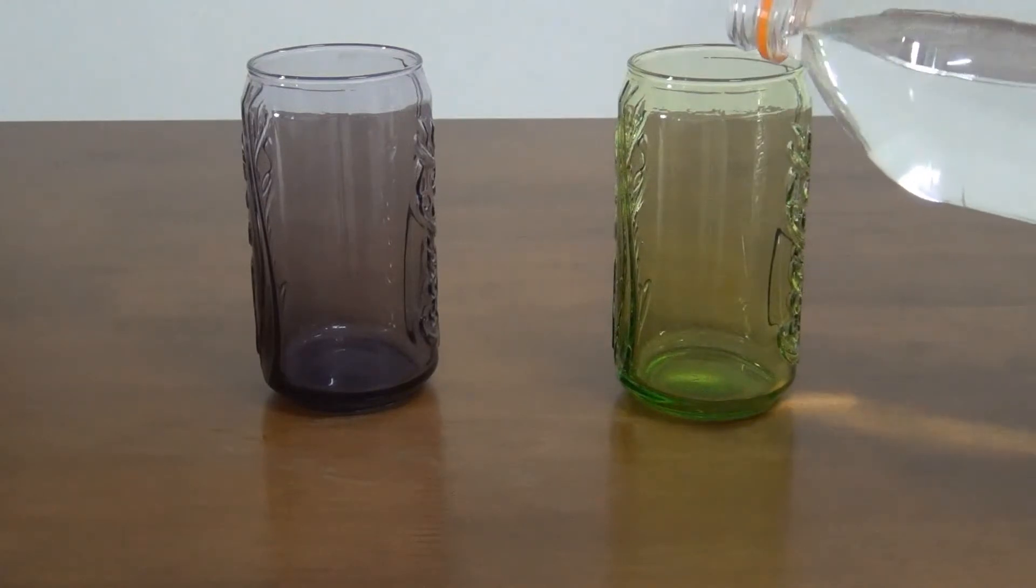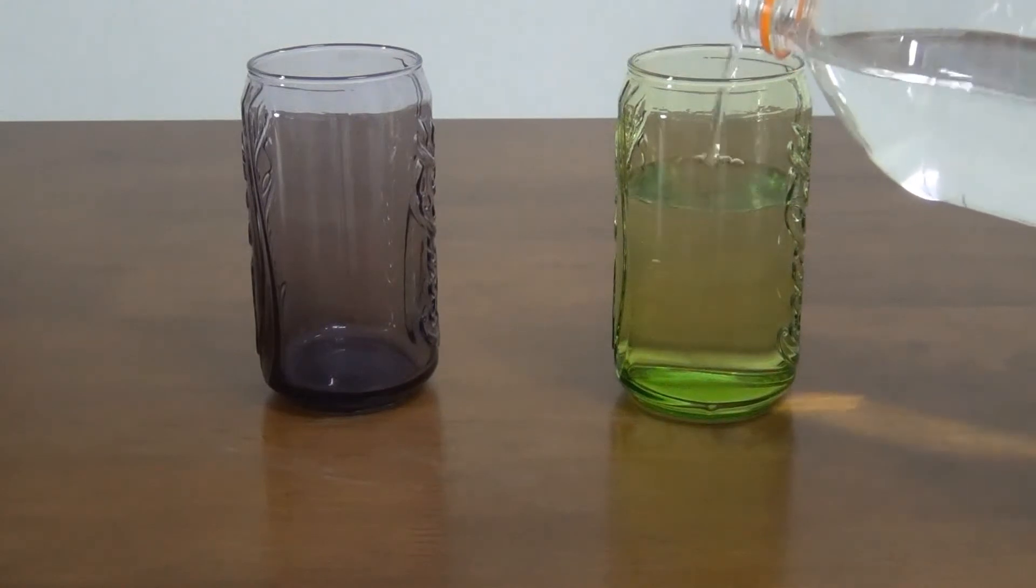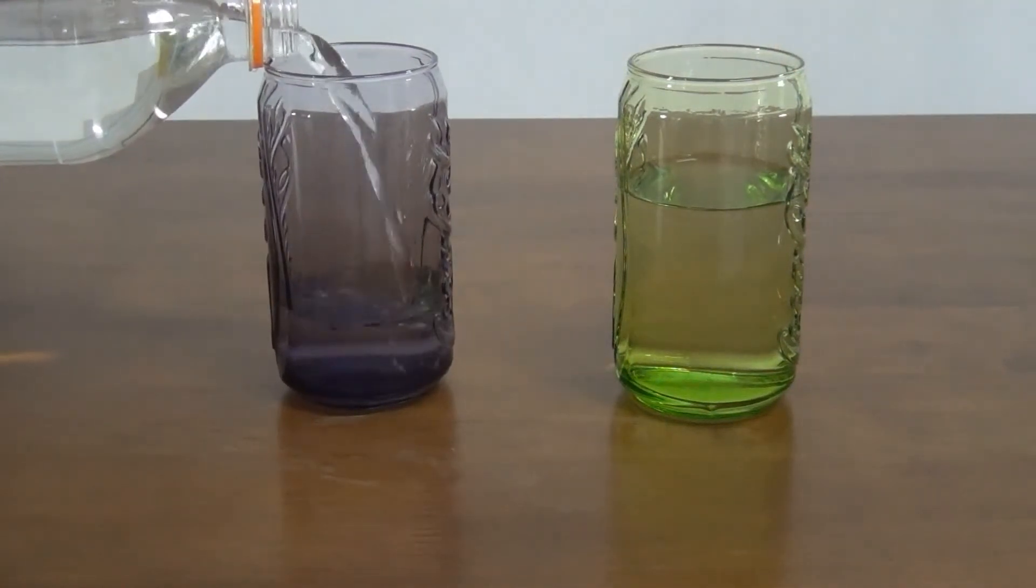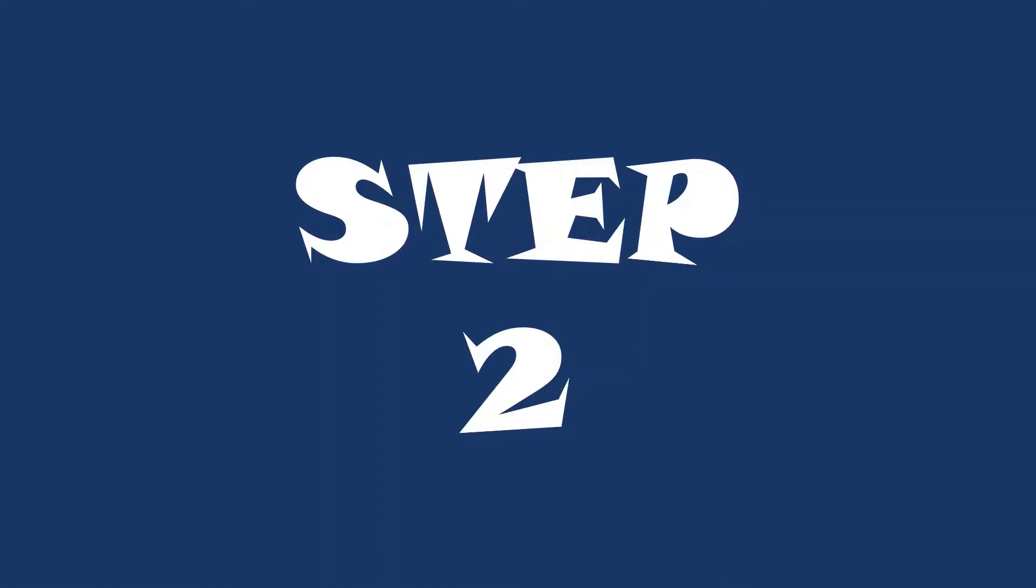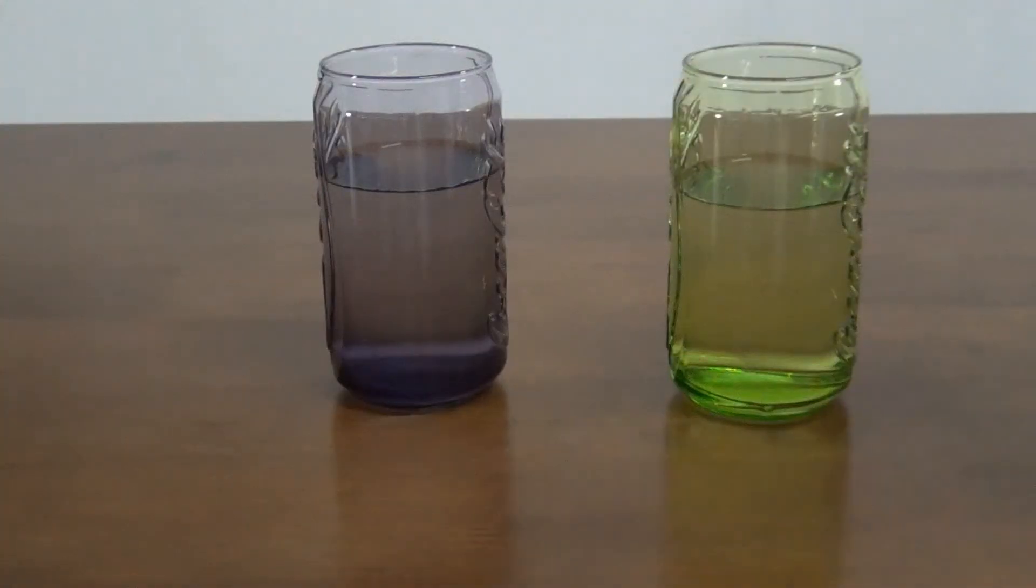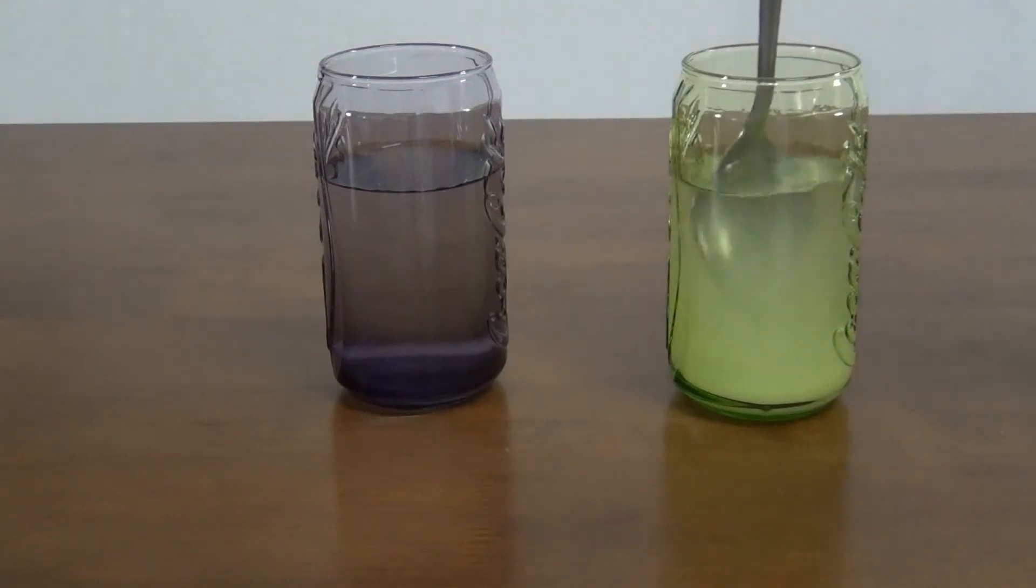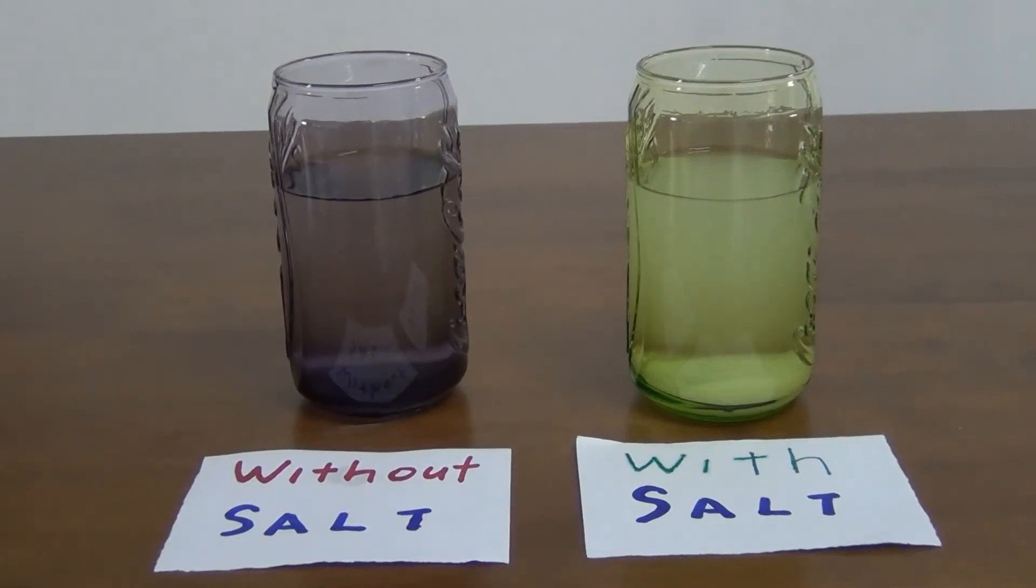Fill both drinking glasses with about 75% full of water. Add 3 spoons of salt into 1 drinking glass and stir it. Label it with salt. Label another without salt.